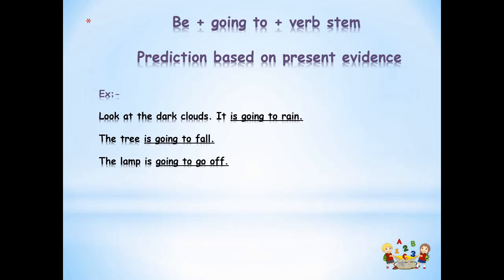We are going to talk about another structure that we can use to talk about future events — that is the construction be plus going to plus verb stem. We use this structure to talk about the future based on present evidence.